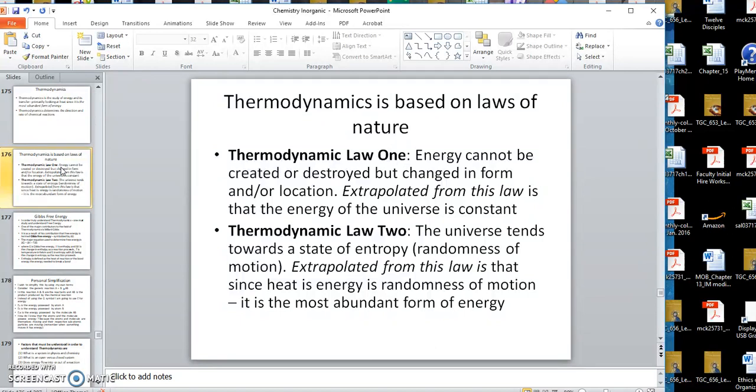Thermodynamic law two, we have actually talked about in a previous video, and that is that the universe tends towards a state of entropy. Entropy is randomness of motion, and if you may recall when I discussed heat, heat is the most randomized form of energy. So most of the energy in the universe is in the form of heat.